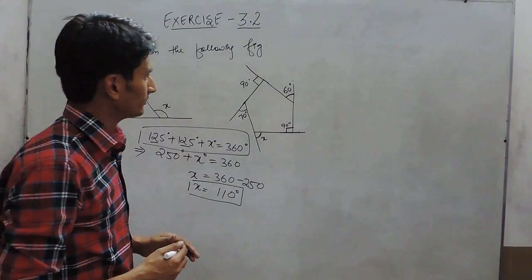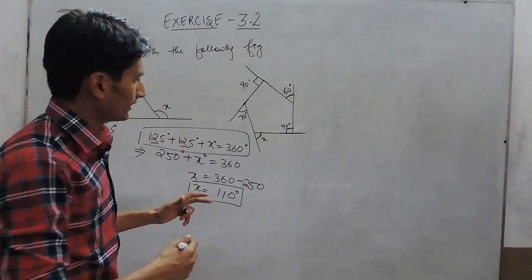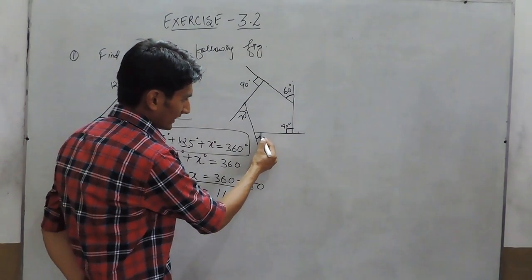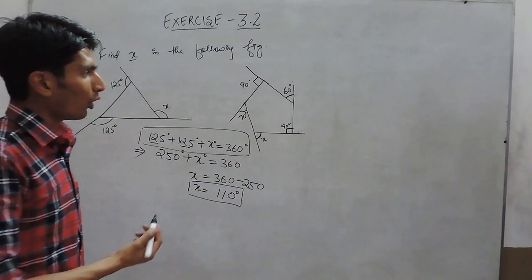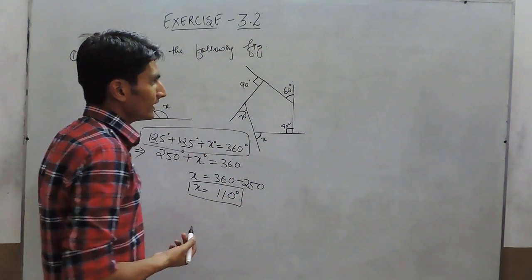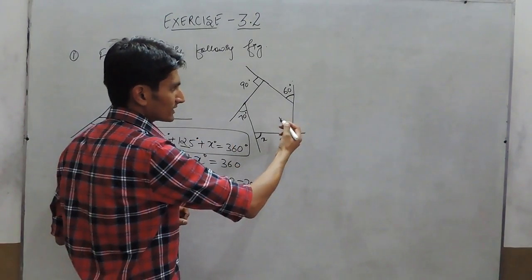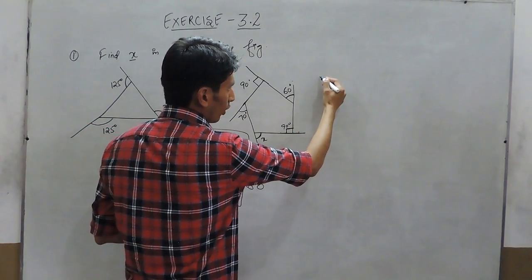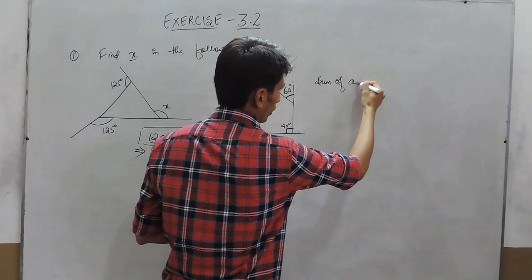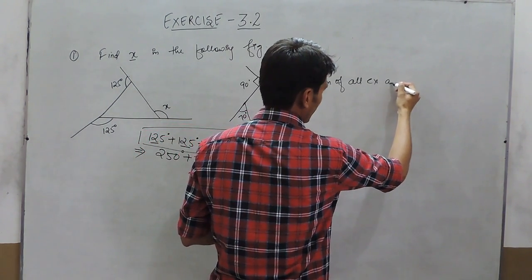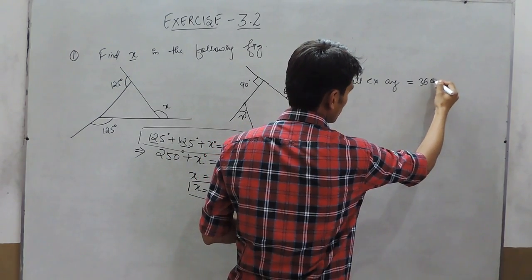In this question we are given a polygon with 5 sides. To find the exterior angle x, we must know all the exterior angles of this polygon so that we can apply the formula that the sum of all exterior angles equals 360 degrees.